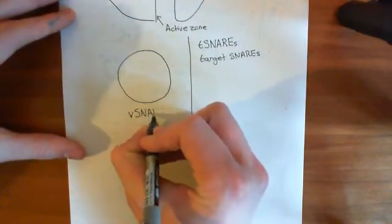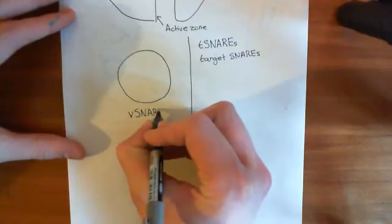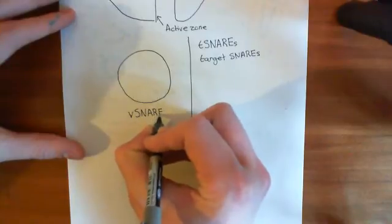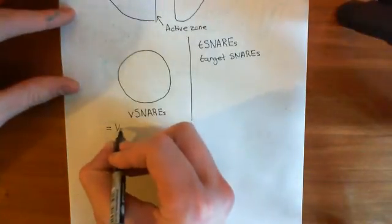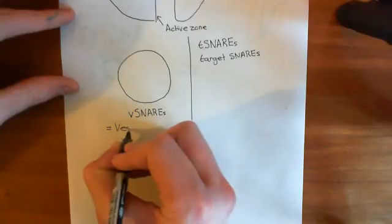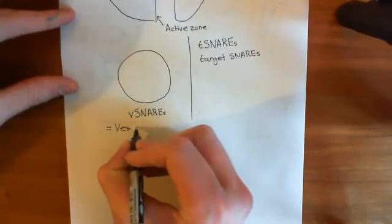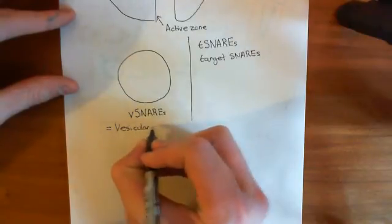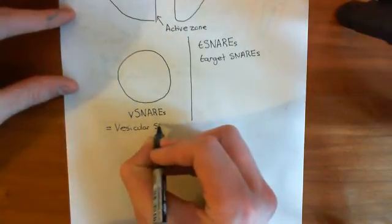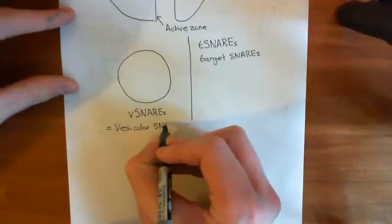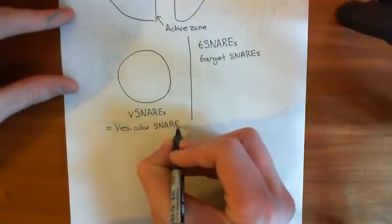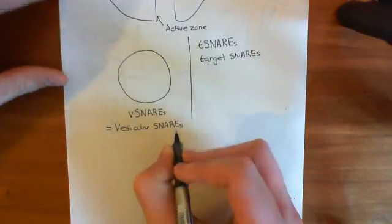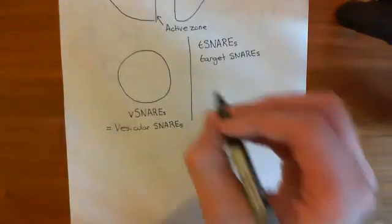The SNAREs on the vesicle are known as V-SNAREs, which stands for vesicular SNAREs. So let's have a look at what proteins are the V-SNAREs and the T-SNAREs.